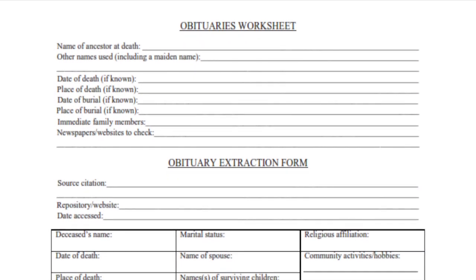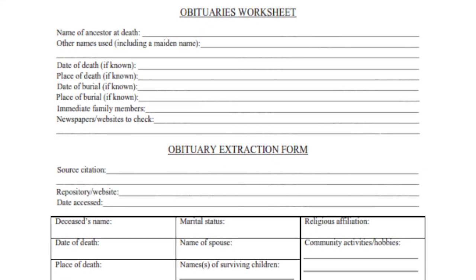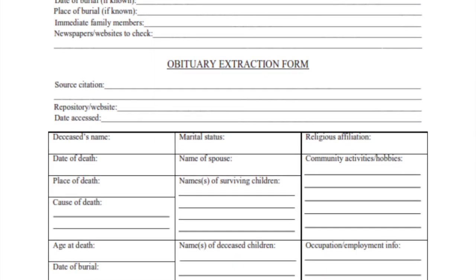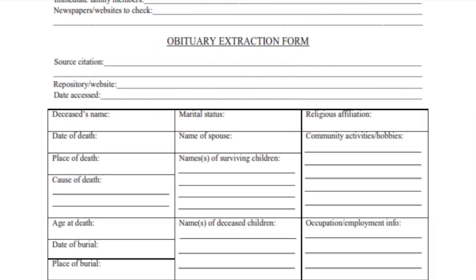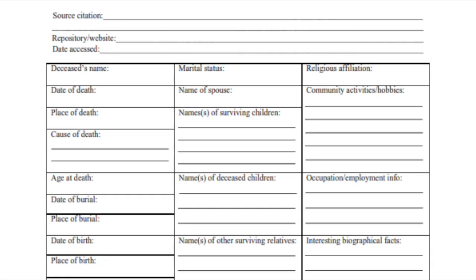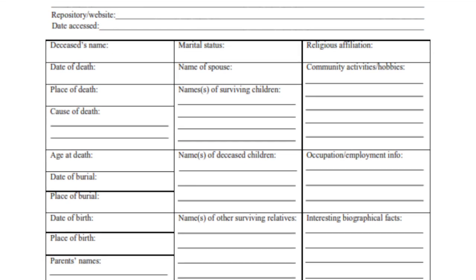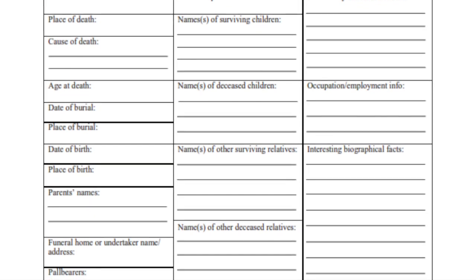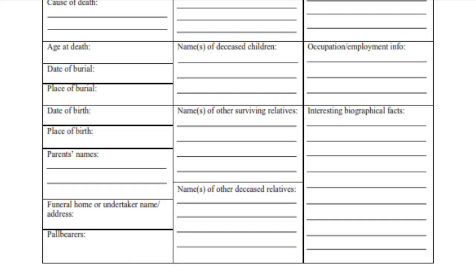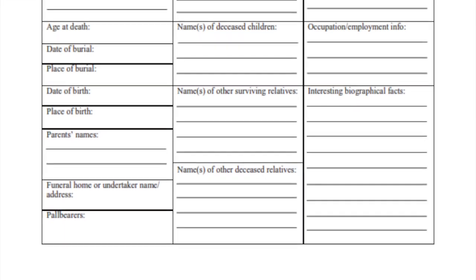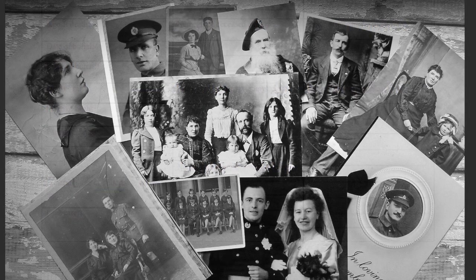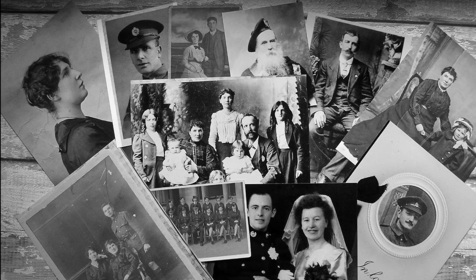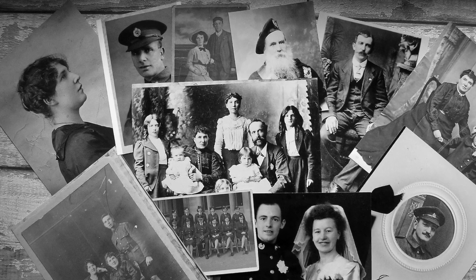To make keeping up with my information easier, I like to use an obituary worksheet and extraction form. This is just a form I found through doing a quick Google search for free obituary extraction form. A blank piece of paper works just as well. I use these forms so that I don't forget any pertinent information. While we go through this, be thinking of a relative for which you would like to find an obituary.